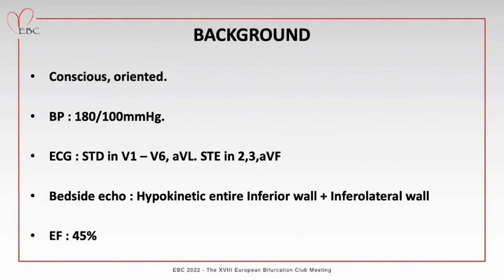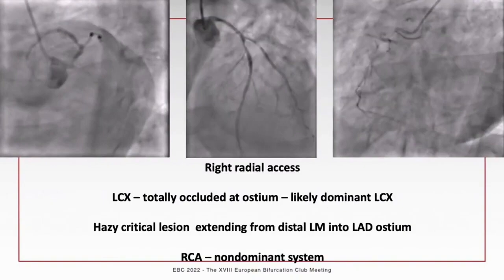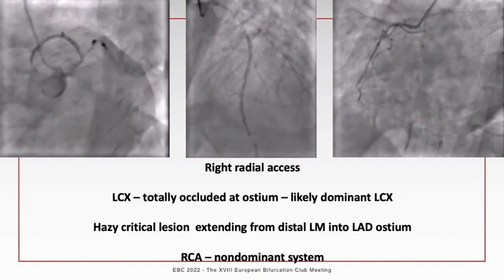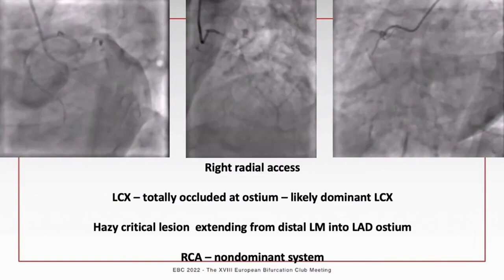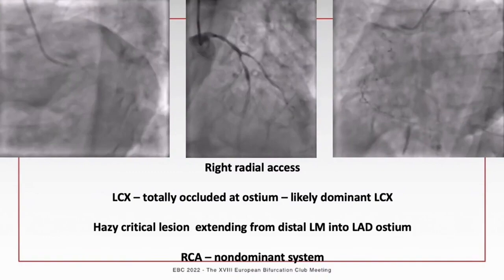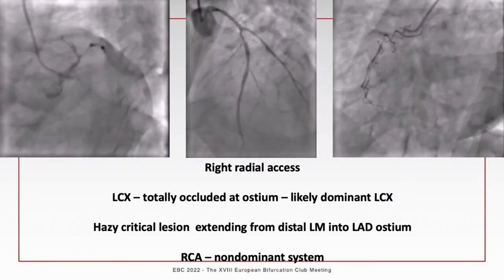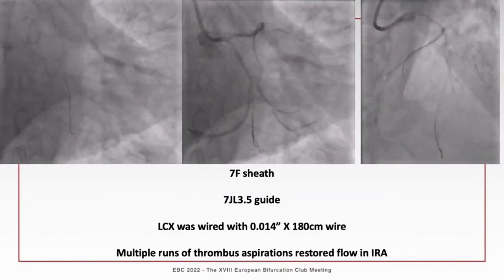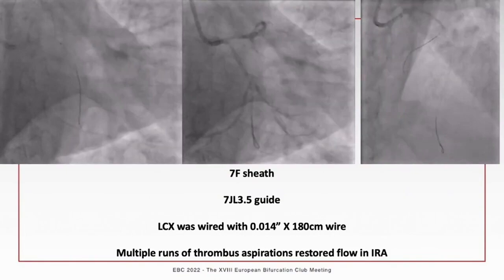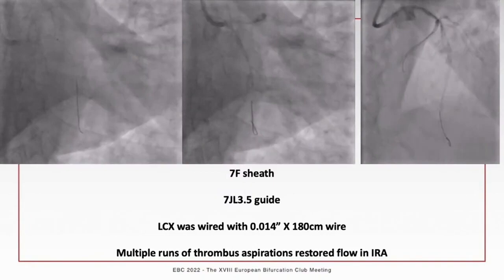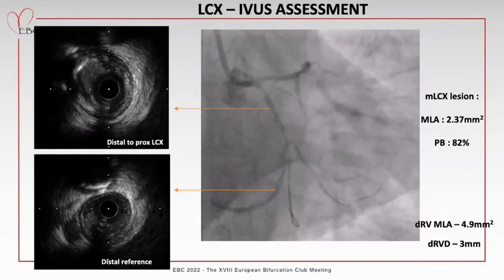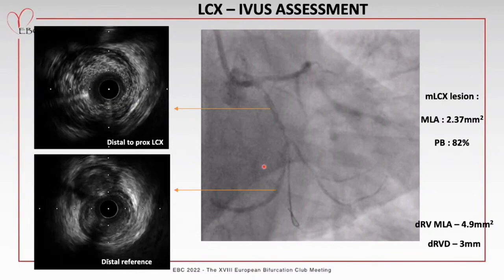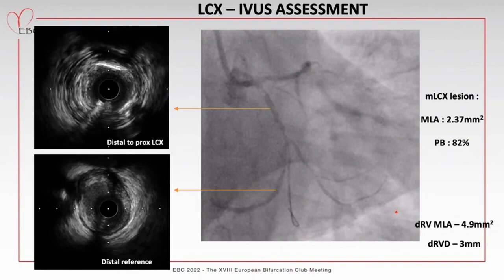Right radial access was obtained and diagnostic angiogram showed a short left main; the circumflex was totally occluded just beyond its ostium - likely the dominant vessel since the right coronary artery was a small caliber system. There was a hazy critical lesion from the distal left main into the LAD ostium, diffuse LAD disease, and another critical narrowing just beyond the diagonal ostium. The circumflex was wired, thrombus aspiration restored flow, and the patient became hemodynamically stable with chest pain relief and ECG changes resolving.